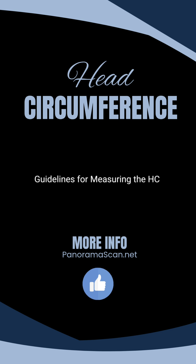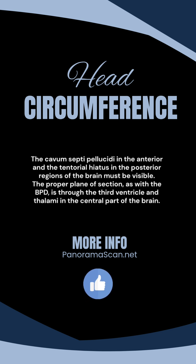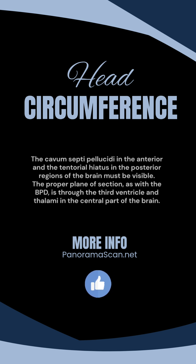The following guidelines apply for measuring the HC. The cavum septi pellucidae in the anterior and the tentorial hiatus in the posterior regions of the brain must be visible. The proper plane of section, as with the BPD, is through the third ventricle and thalami in the central part of the brain.